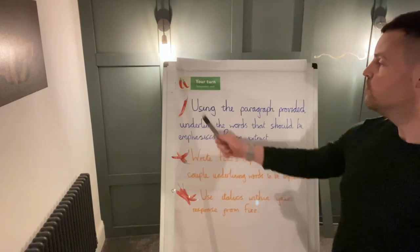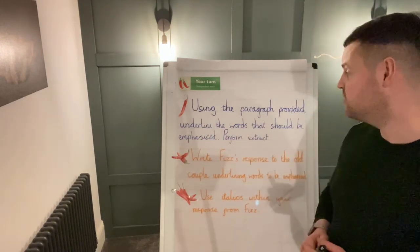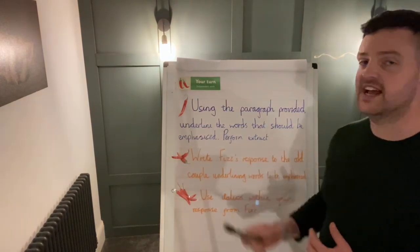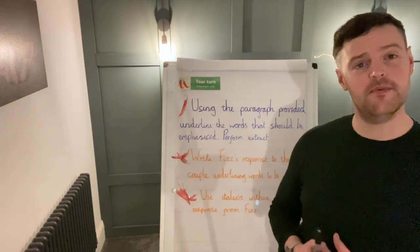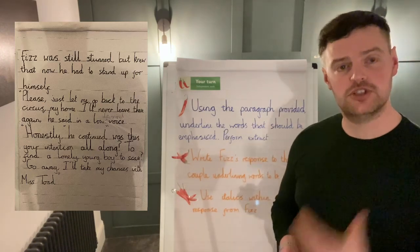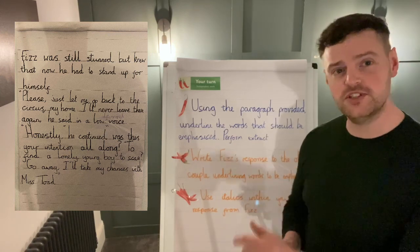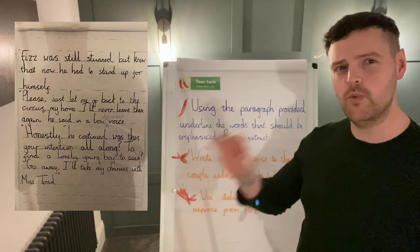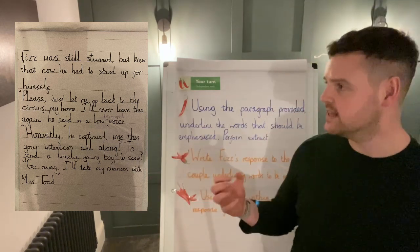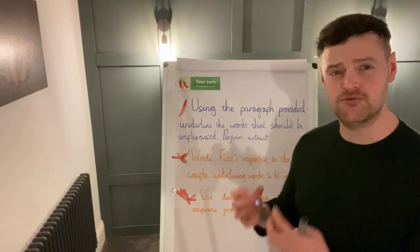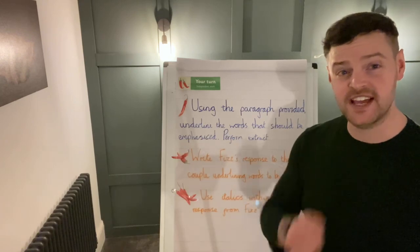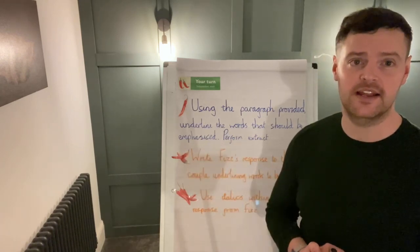So, Chilly 1: your task is to use the paragraph that I'm going to provide and underline the words that should be emphasised before performing the extract. Because within the paragraph I'll provide for you, there will be some spoken words from Fizzlebert towards the old couple, where you have to go through and think — which word would he really emphasise? Maybe he's getting a little bit angry at certain points, or maybe he's really pleading a certain word. Please. And you think that should be emphasised — you'll go through and underline that particular word.